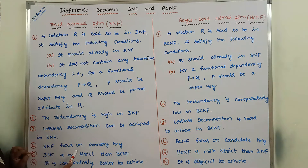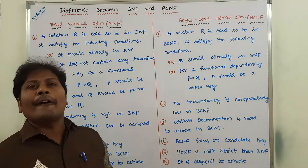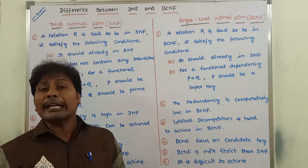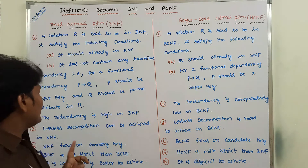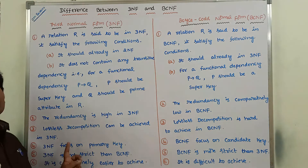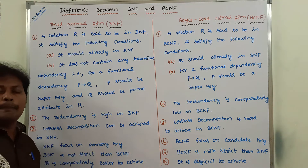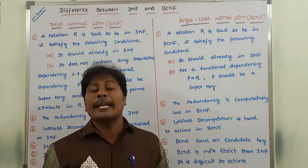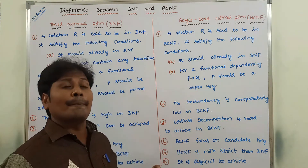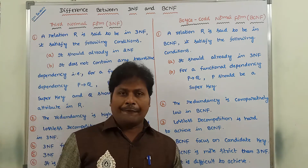3NF is not strict compared to BCNF. Because of high redundancy in 3NF, we can say that 3NF is not strict compared to BCNF. Whereas in the case of BCNF, BCNF is more strict than 3NF.